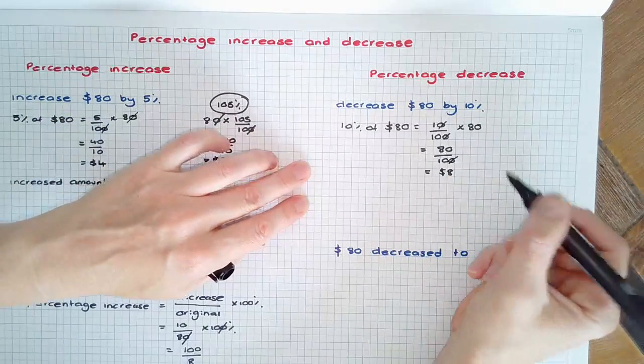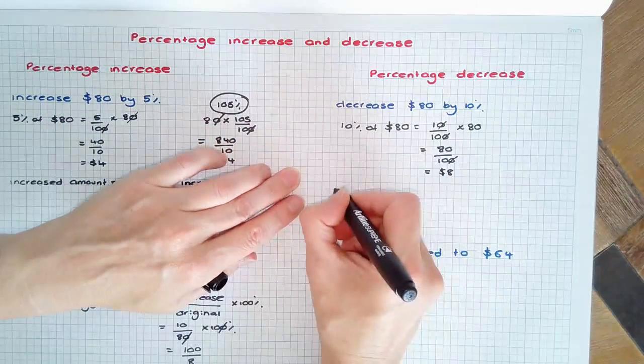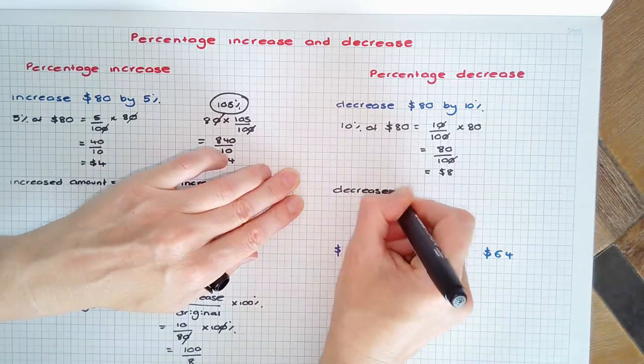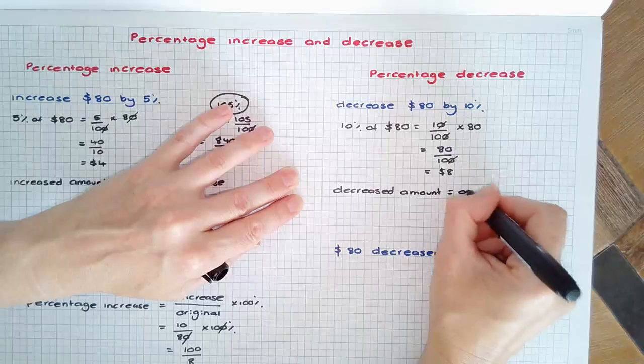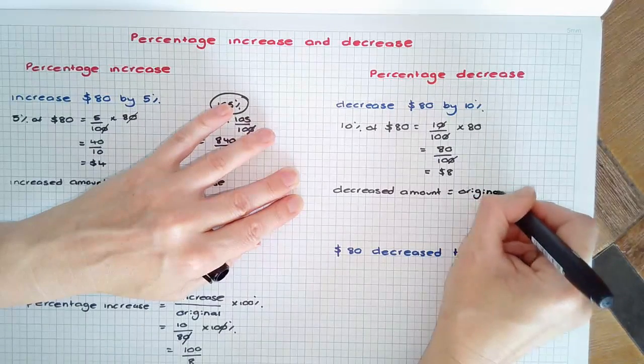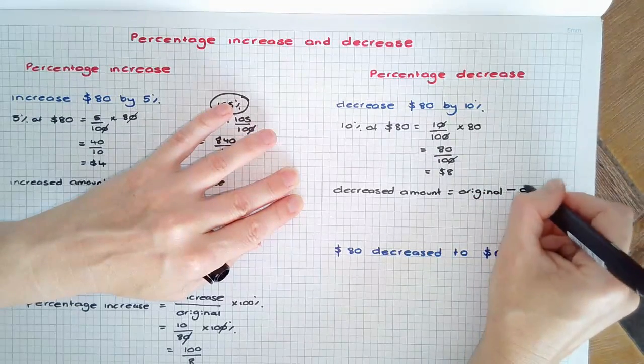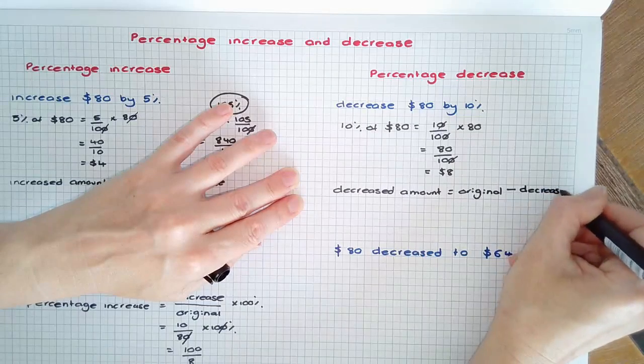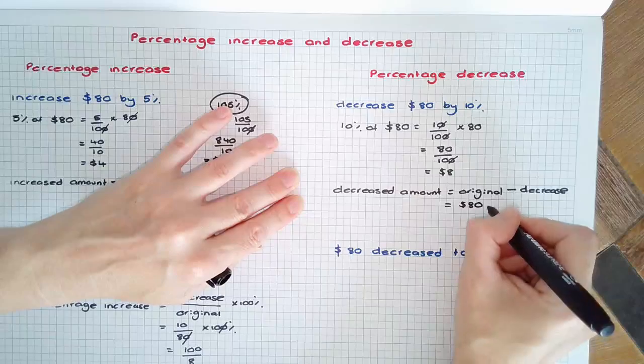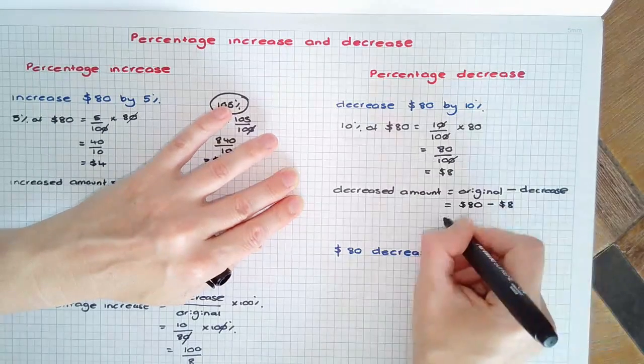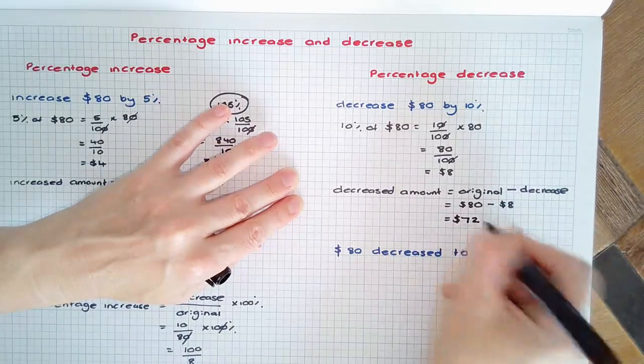So the reduction is $8, but the decreased amount equals the original price minus the decrease. In this case it was originally $80 and the reduction was $8 giving a final answer of $72.